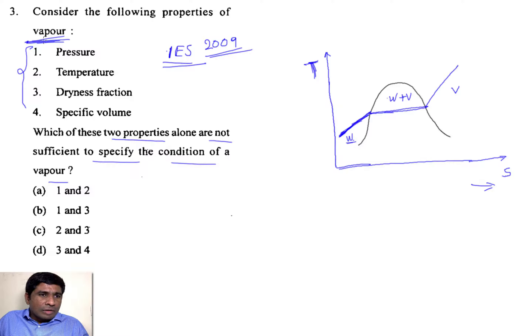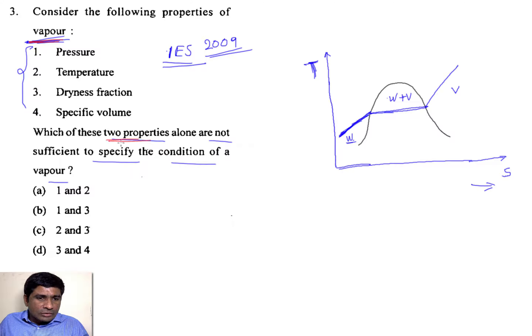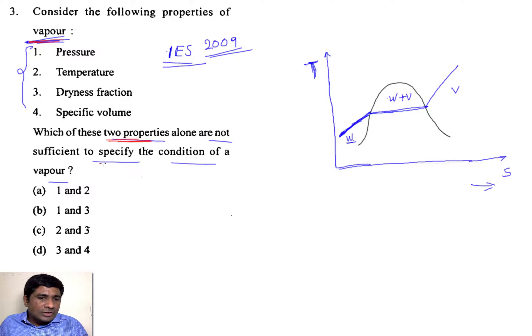The properties of vapour are given — four properties have been given — and the question is: which two of these properties alone are not sufficient to specify the condition of a vapour?